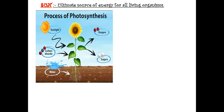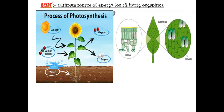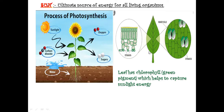How does a plant make food? The leaf is the food factory of a plant. Leaves have stomata through which they take carbon dioxide from air. Stomata also have guard cells which help open or close the stomata as required. Leaves also contain chlorophyll — the green pigment that captures sunlight energy.